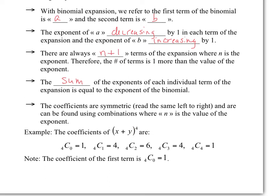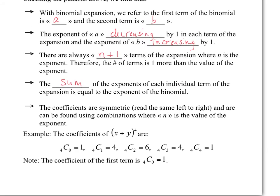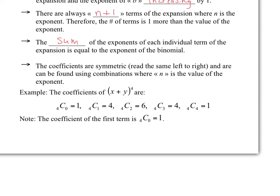How do we get the coefficients? They are actually combinations. The first one comes from 4 choose 0, the second from 4 choose 1, then 4 choose 2, 4 choose 3, 4 choose 4. That would be true for all of them — so for power 3 you'd have 3 choose 0, 3 choose 1, 3 choose 2, 3 choose 3. The first term always has n choose 0, and the last term has n choose n.